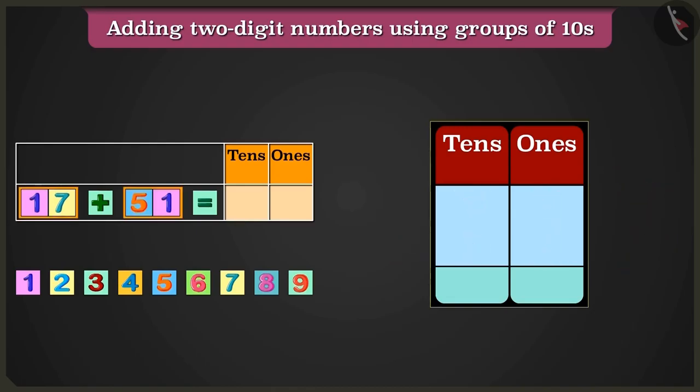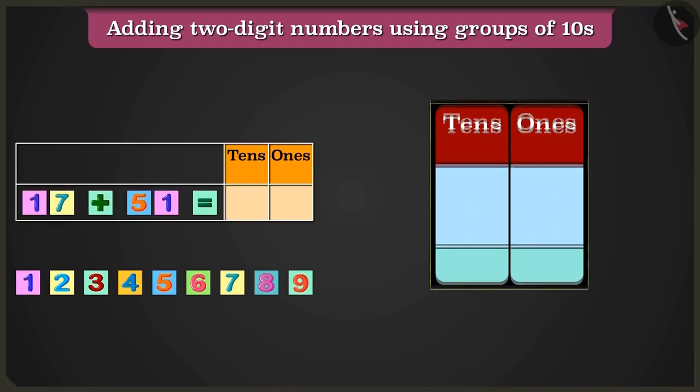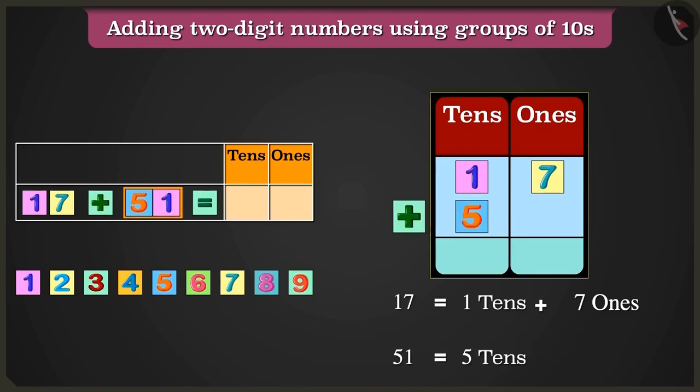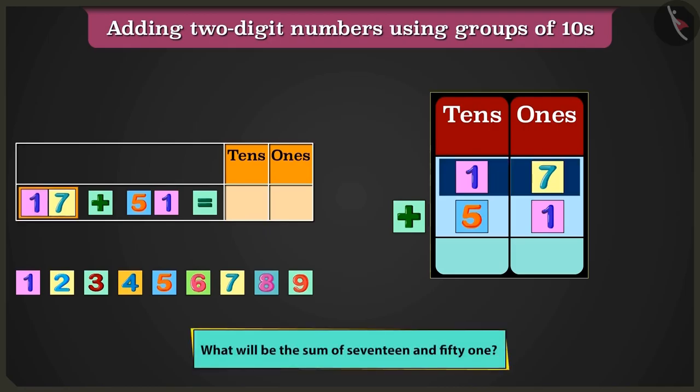We have to add 17 and 51. So, 17 that is 1 tens and 7 ones along with 51 that are 5 tens and 1 ones. Now, can you tell me what will 17 and 51 add up to?